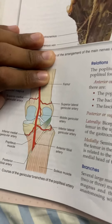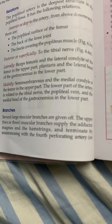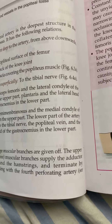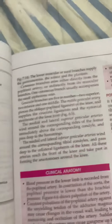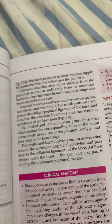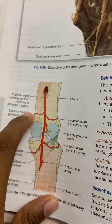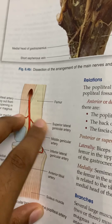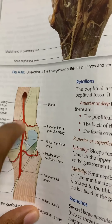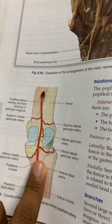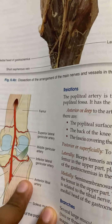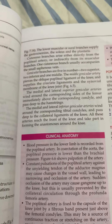The branches include several muscular branches. The upper two or three muscular branches supply the adductor magnus and the hamstrings, and they terminate with the fourth perforating artery. Cutaneous branches arise directly from the popliteal artery or indirectly from its muscular branches. There are five genicular branches: superior medial and superior lateral genicular arteries wind around the respective femoral condyles; the middle genicular artery pierces the oblique popliteal ligament; and the inferior medial and inferior lateral genicular arteries wind around the corresponding tibial condyles. They take part in forming the anastomosis around the knee.